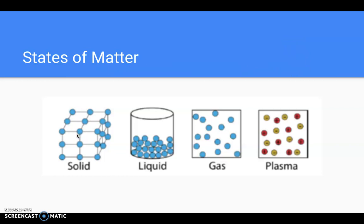There are four states of matter. Three of them are very common, or we see them all the time on Earth. Those are solids, liquids, and gases.